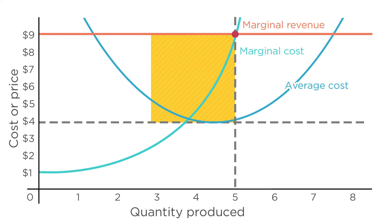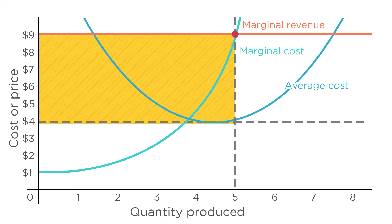But now this rectangle representing profit is smaller. The size of the rectangle is the quantity sold, five, times the difference between price and average cost, which is also five. Five times five equals a profit of $25, smaller than the $30 in profit the firm was making before the penalty was imposed.